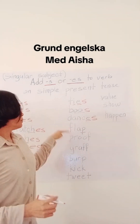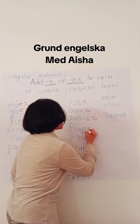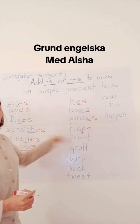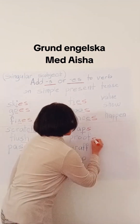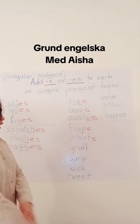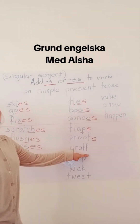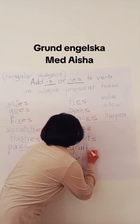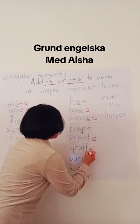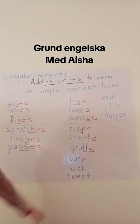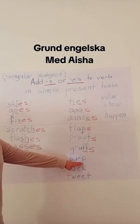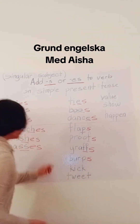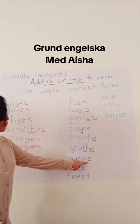Now if we have p, flap becomes flaps. For proof, we have to add s. And we have double f — graph — so we just have to add s. Now what if it ends with p? We just have to add s. So burp becomes burps.